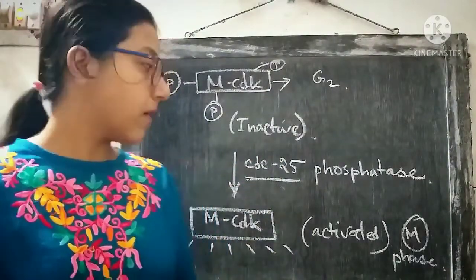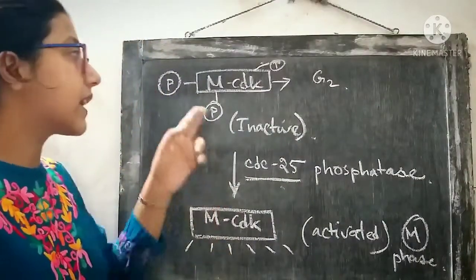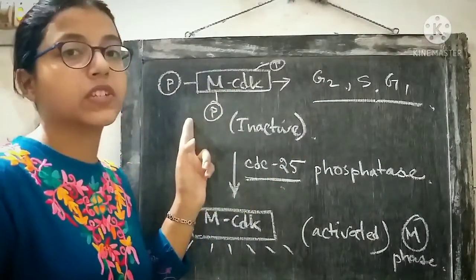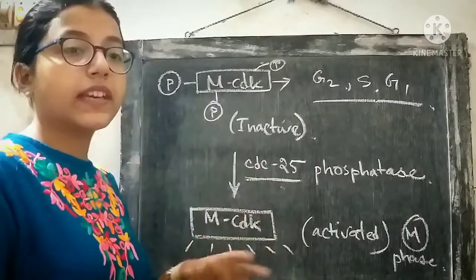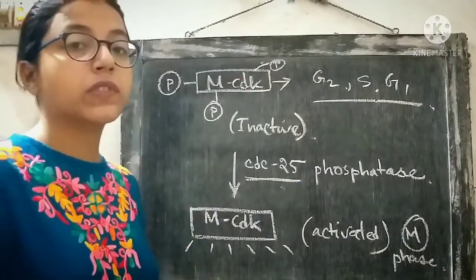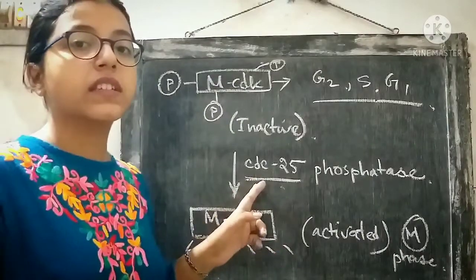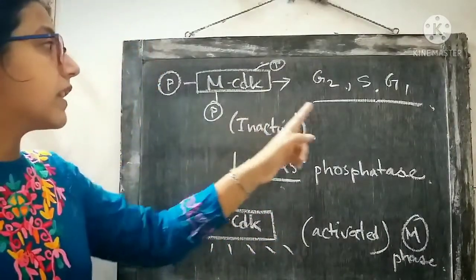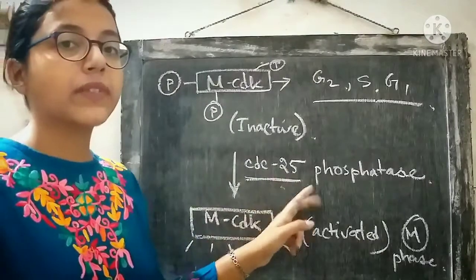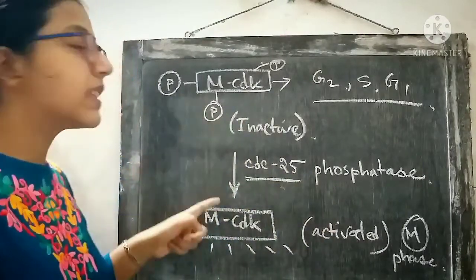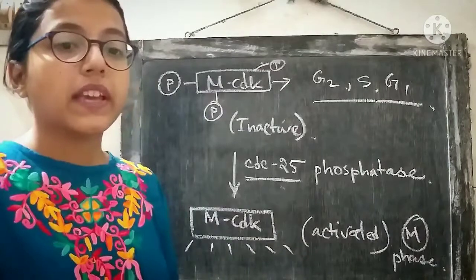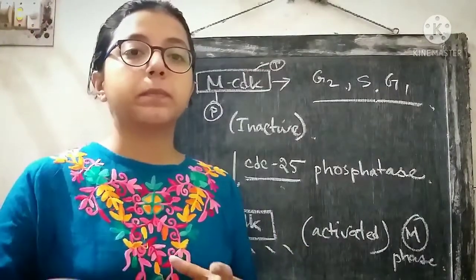CDC25 phosphatase removes the inhibitory phosphate group from MCDK, resulting in activation of MCDK, which then progresses the cell into the mitosis phase. The diagram shows that initially in G2 phase, MCDK is kept inactivated by inhibitory phosphorylation. In late G2, just prior to the beginning of the M phase, MCDKs are activated by dephosphorylation carried out by CDC25 phosphatase. CDC25 removes the phosphate group and MCDK becomes activated, helping the cell progress into the M phase.